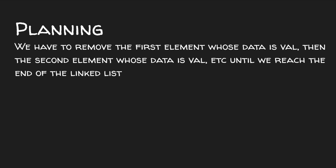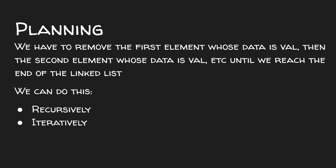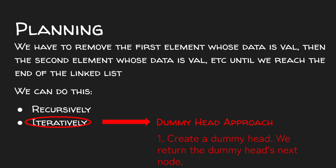We have to remove the first element whose data matches the given value, then the second, then the third, and so on until we reach the end of the linked list. Since we're performing an operation repeatedly, we can do this recursively or iteratively — I'm going to choose iteratively since it feels more intuitive. Taking an iterative approach with a linked list problem means I'll probably need a dummy head, since otherwise we'd have to treat the head as an edge case. The dummy head removes that special conditional logic for removing the head node. Our first step is to create a dummy head, and at the end we will return the dummy head's next node as our solution.